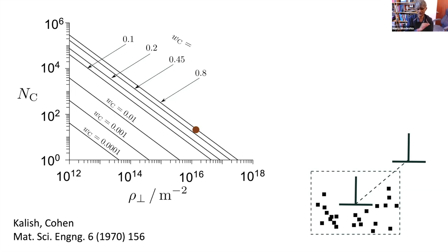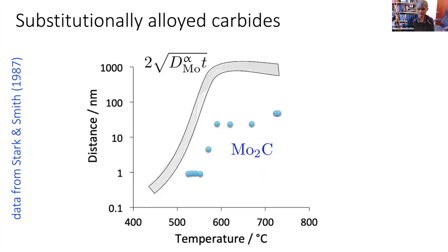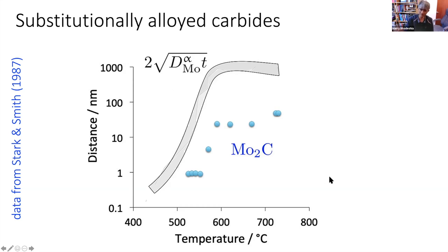This is a deformation-induced transformation of cementite into supersaturated ferrite. It is not martensitic — despite one paper from a Max Planck institute claiming martensitic transformation — it is simply the dissolution of carbon at dislocations. Turning to substitutionally alloyed carbides rich in substitutional alloying elements, there is no possibility of them forming by a displacive transformation mechanism. Analysis from the atom probe work by Stark and Smith shows that the trend in particle size is similar to a rough calculation of the diffusion distance of molybdenum atoms — without substitutional atom diffusion these carbides simply would not form.